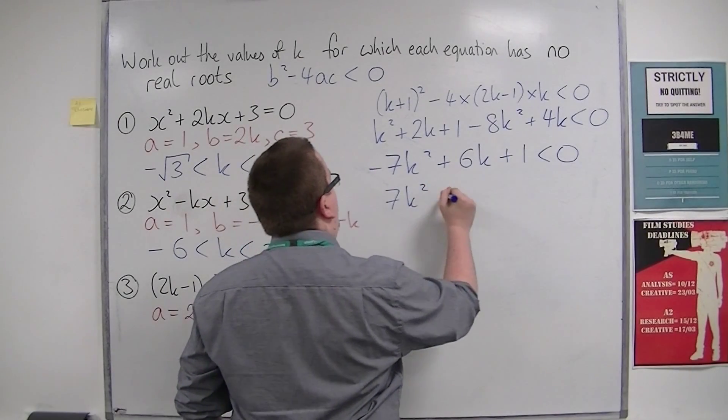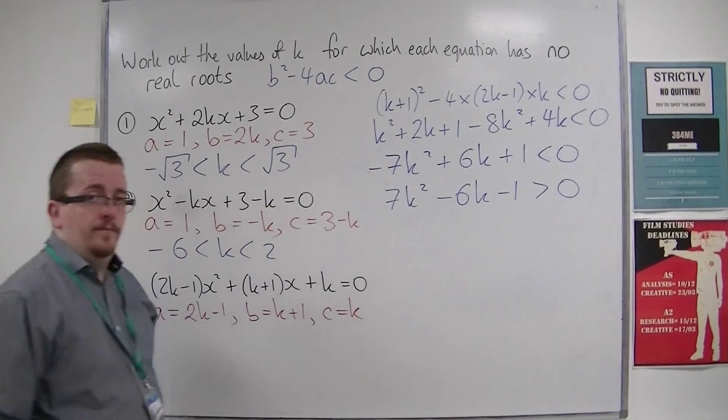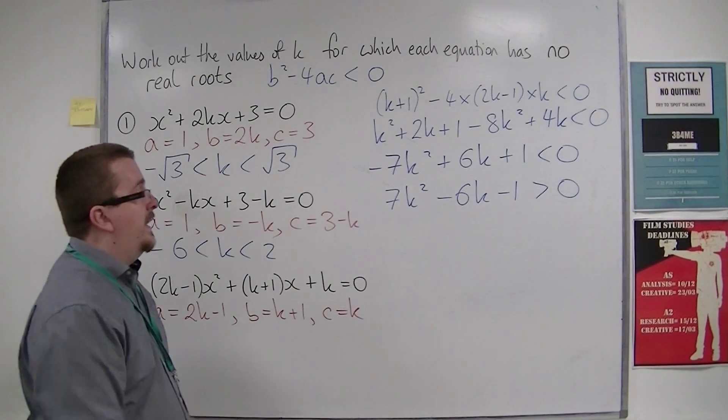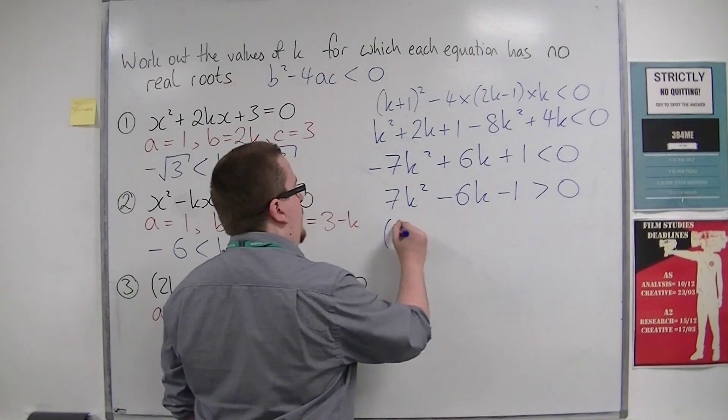Because I don't like working with a negative x², I'm going to multiply everything by -1. In doing so, that is going to change the direction of the inequality, because I'm multiplying through by a negative.